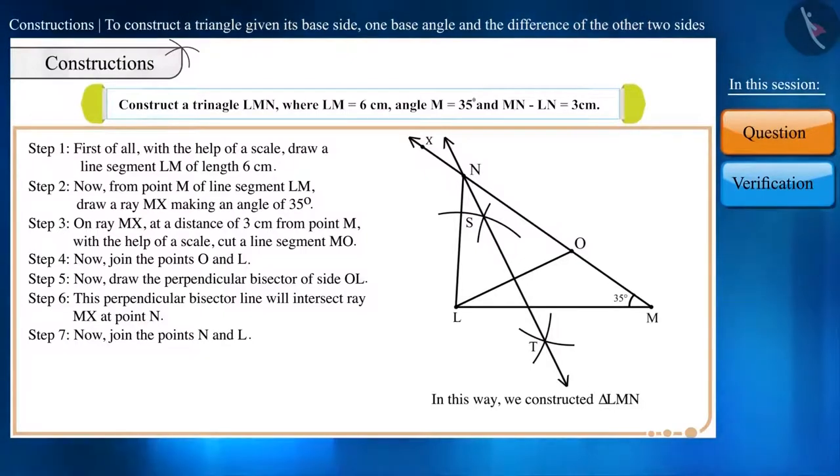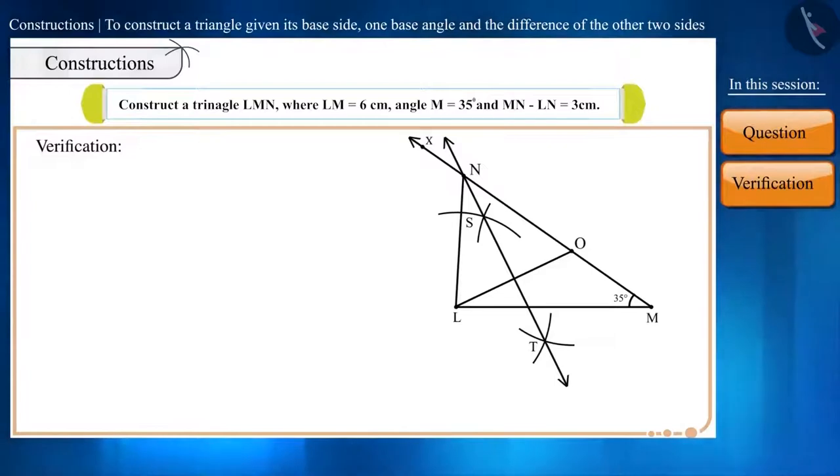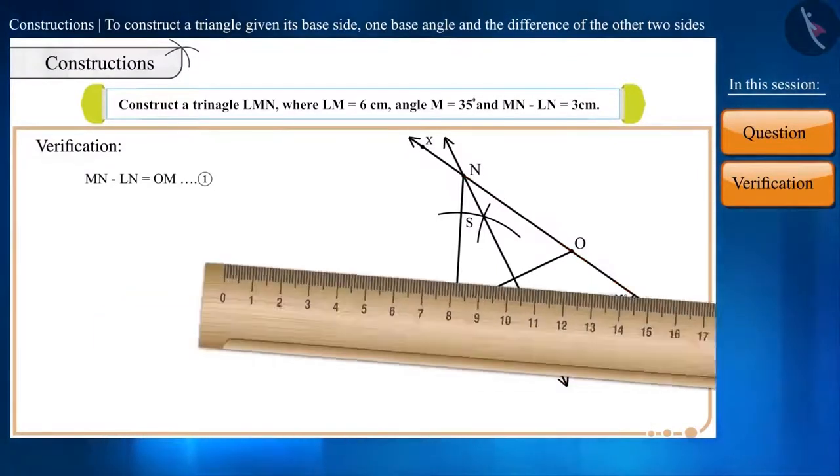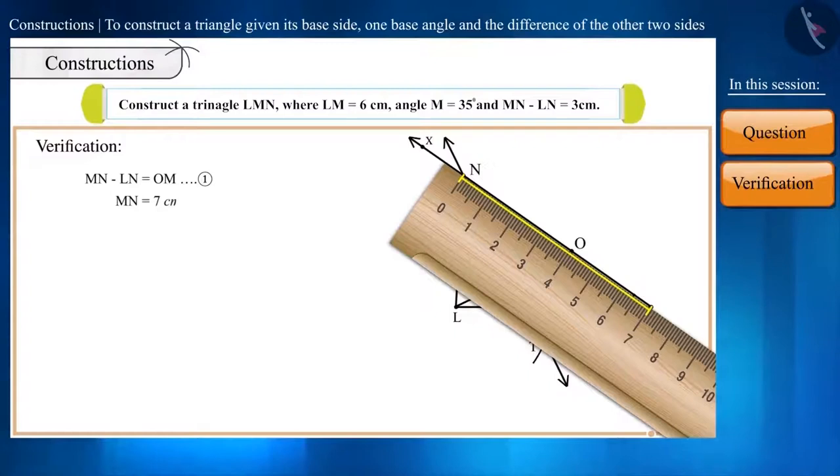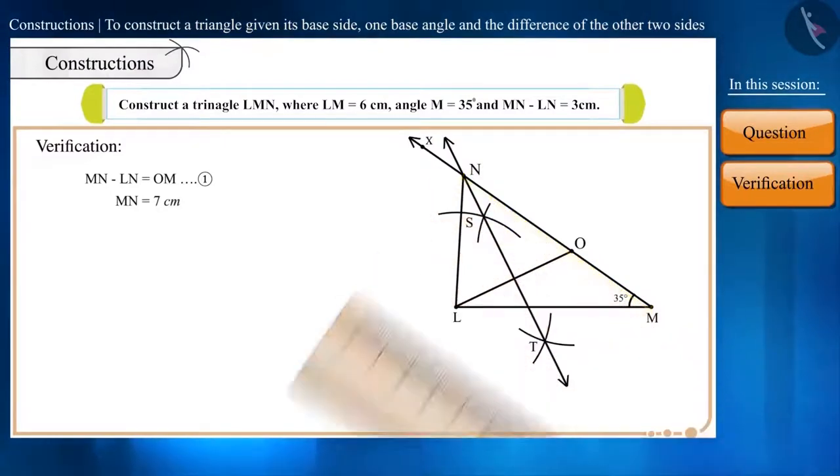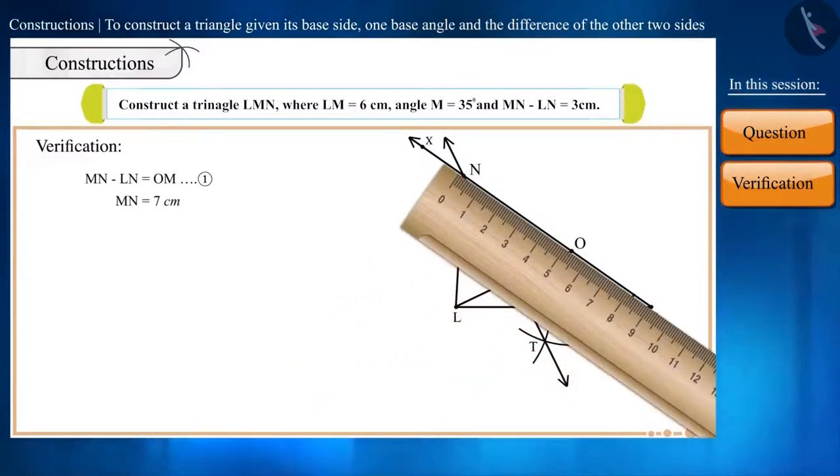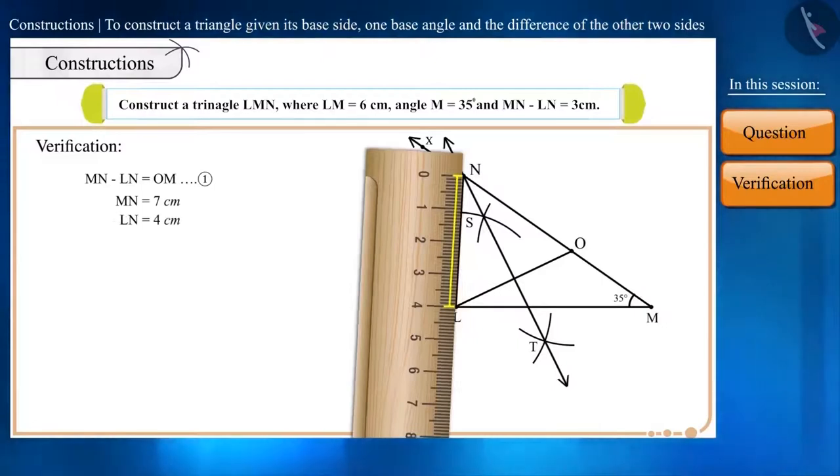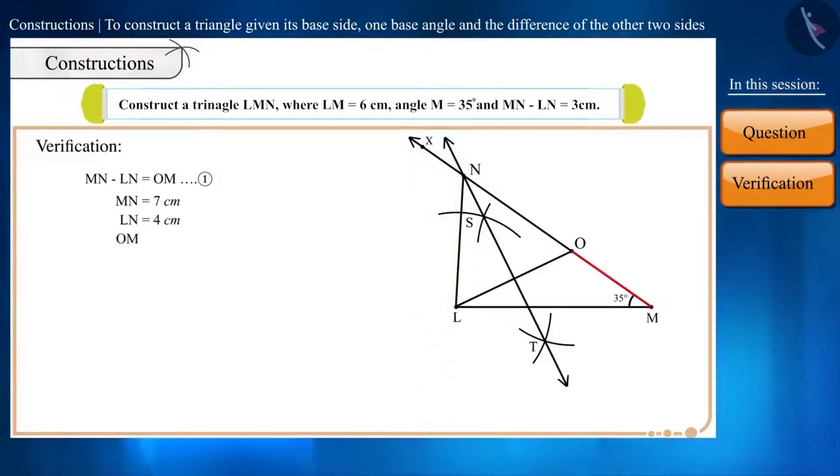For verification, MN minus LN equals OM. Let's call it equation 1. Let's take the measure of side MN. The length of MN is 7 cm. Now let's take the measure of LN, which is 4 cm. We have taken the length of side OM as 3 cm. On subtracting the values, our construction gets verified.